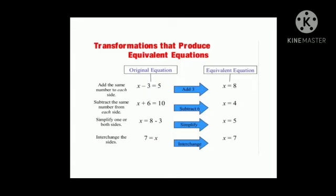Now, simplifying one of both sides. x is equal to 8 minus 3. Simplifying, that is by subtracting, we get the answer x is equal to 5. The value of x is 5.